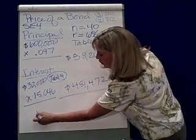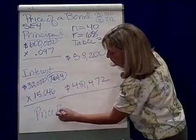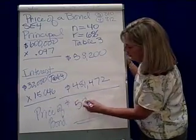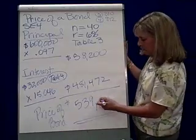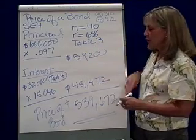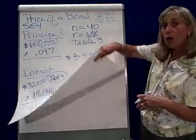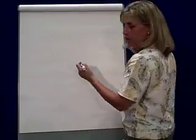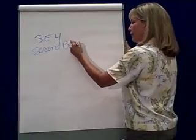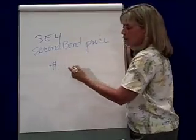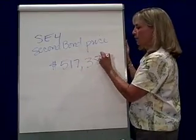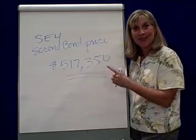Adding these together gives us the price of the bond in today's dollars: $58,200 plus $481,472 means this bond should sell for $539,672. That's how you get the price of a bond — find the present value of the principal and the present value of the interest. There's another bond in this problem for you to try. The check figure for the second bond price is $517,350, which again is the principal and the interest combined.